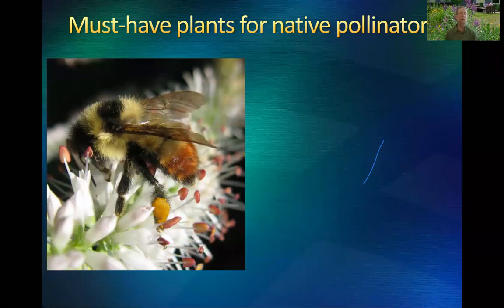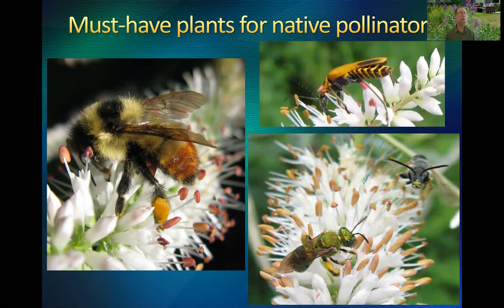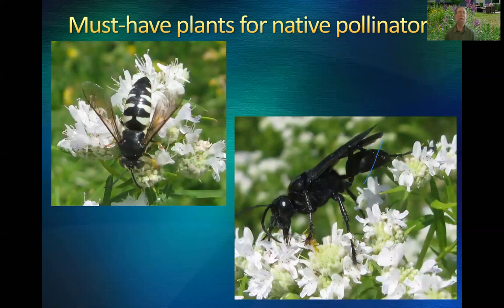Culver's root is really a great bee plant. It gets fairly tall with these tall, narrow, white spikes of flowers — brings in a lot of bumblebees, sweat bees, beetles, all kinds of things. Just a wonderful plant to have. Mountain mint is a particular favorite of wasps, and there's that great black wasp on the right again.